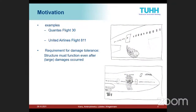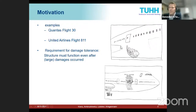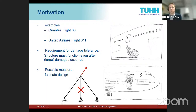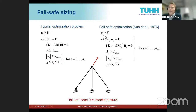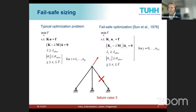Fail-safe optimization tackles the requirement in certain industries to design damage-tolerant structures that can carry load even in the case of damage — not only large damages but small ones too. One measure is a design capable of carrying the load even if one load path or one structural member fails. A standard optimization problem minimizing mass with stress and eigenfrequency constraints requires solving both equilibrium and eigenvalue problems for each failure case considered.